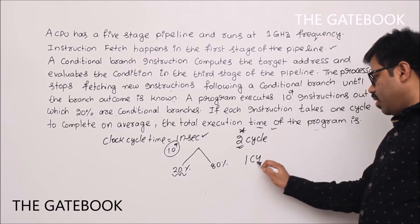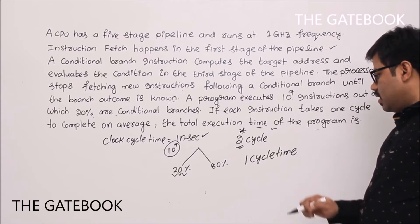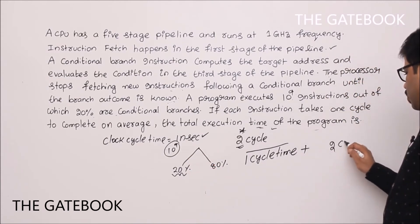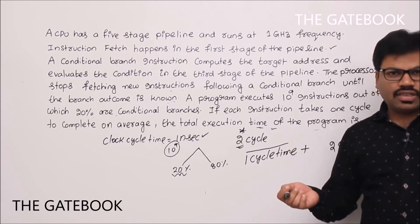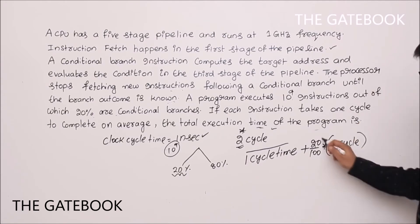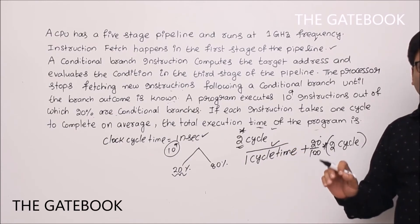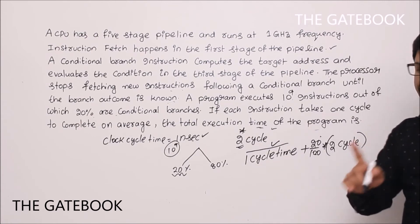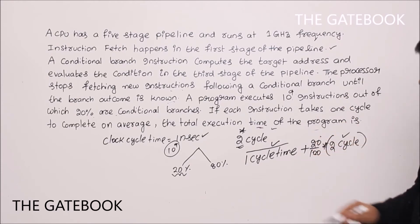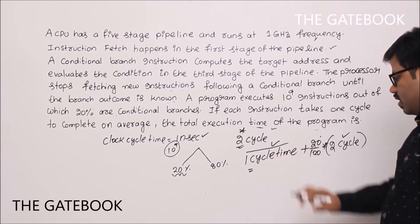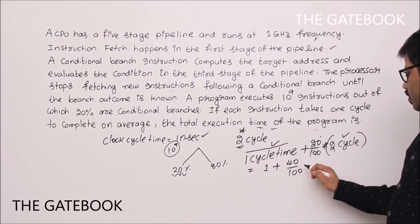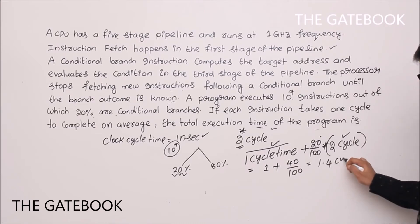We can now calculate the average instruction execution time. All instructions have a base of one clock cycle. On top of that, there is a penalty of two extra cycles, but only for 20% of instructions — the conditional branches. So average CPI = 1 + (20% × 2) = 1 + 0.40 = 1.4 cycles on average.